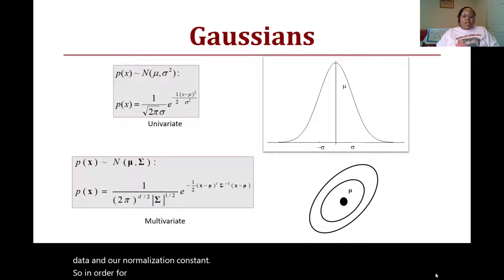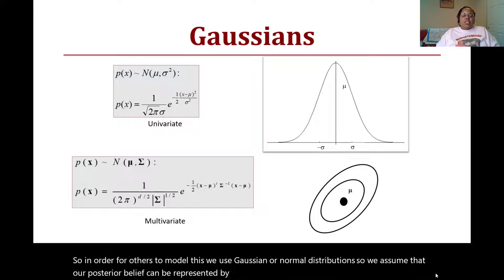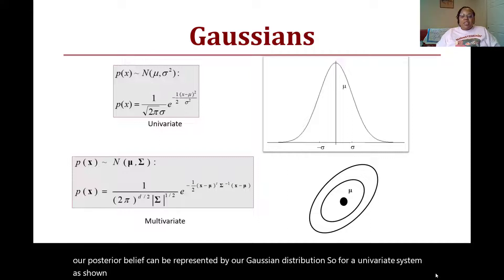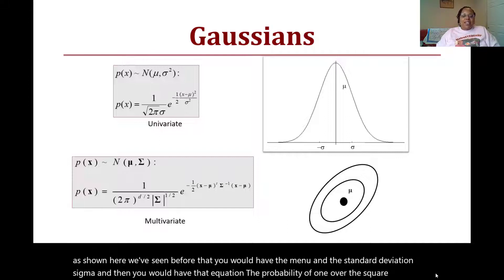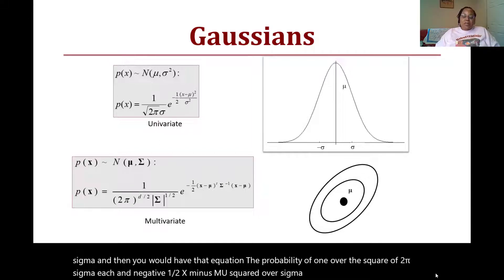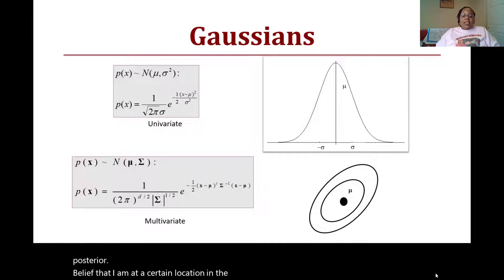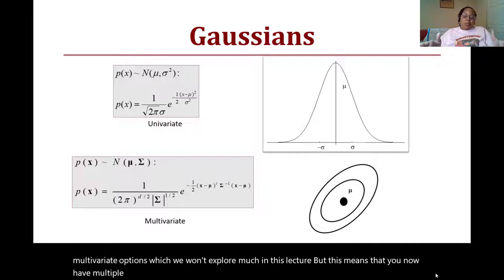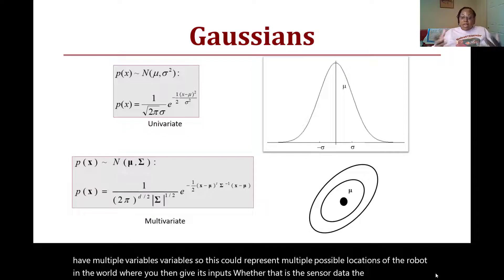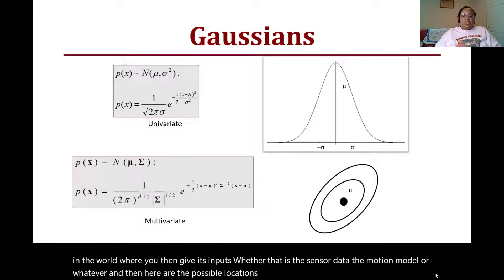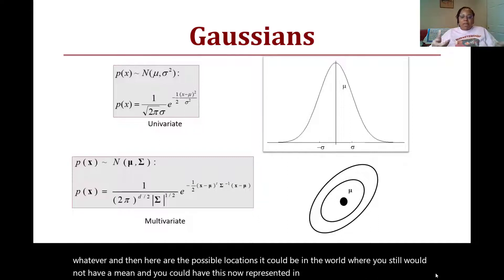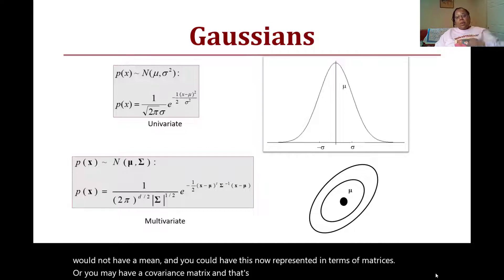In order to model this, we use Gaussian or normal distributions. We assume that our posterior belief can be represented by a Gaussian distribution. For a univariate system as shown here, we've seen before that you would have the mean μ and the standard deviation σ, and then you would have that equation: the probability of 1 over the square root of 2πσ times e to the negative one-half (x - μ)² over σ² to represent the posterior belief that I am at a certain location in the world. At the bottom you can have the multivariate options. This means that you now have multiple variables, so this could represent multiple possible locations of the robot in the world. You still would now have a mean and you could have this now represented in terms of matrices where you may have a covariance matrix, and that's what these shapes of the models here would represent - the possible locations.